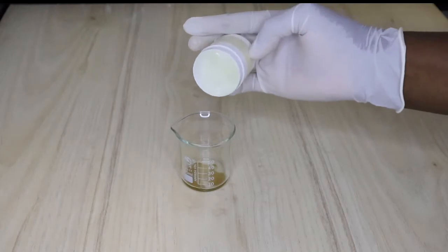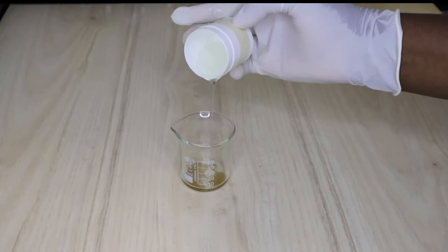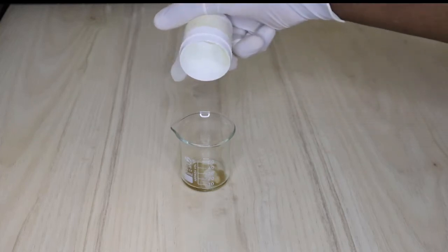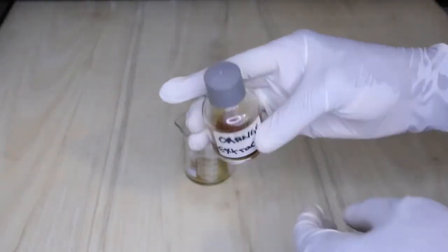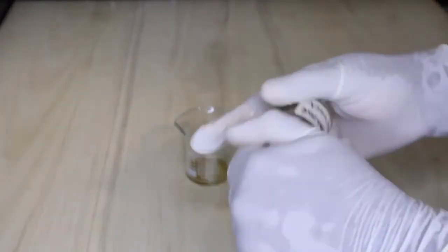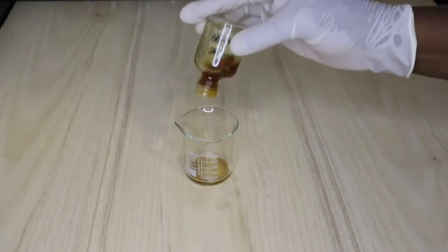My next ingredient I'm going to be adding is B panthenol. B panthenol in this case is going to help to keep our hair under control because of the pro vitamin B in it that helps to strengthen and boost your hair. It can also be used on your skin.